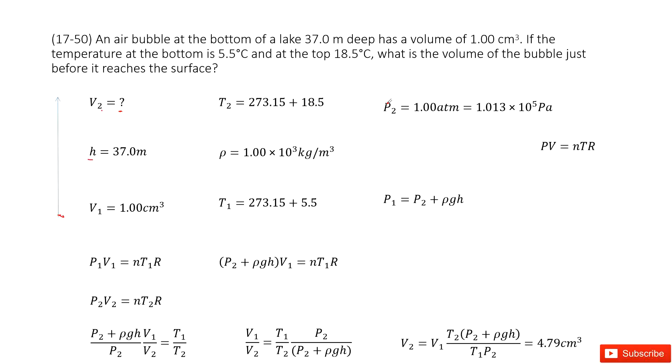At the surface of the lake, the pressure becomes P2. P2 is just the lake surface, so it is the sea level pressure, 1 atm. If we write it in the unit of Pascal, it is this number.